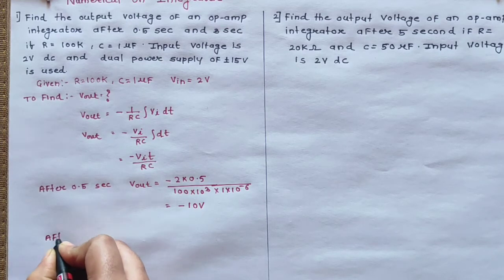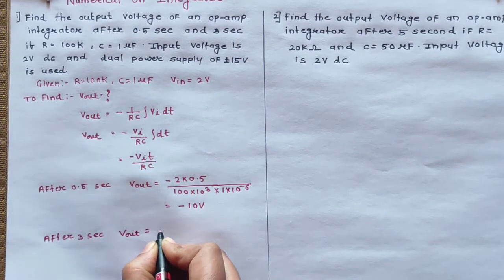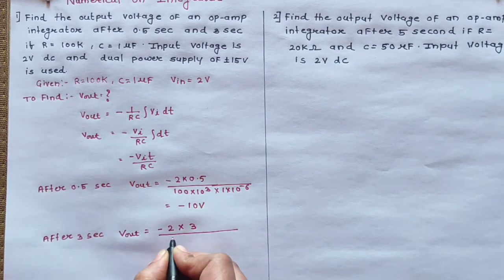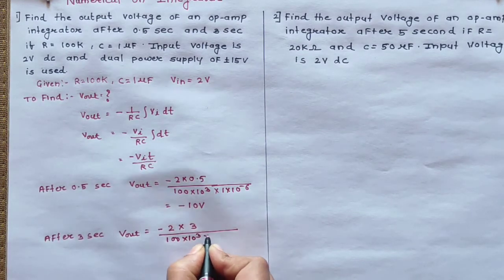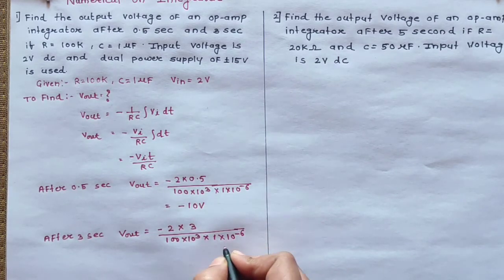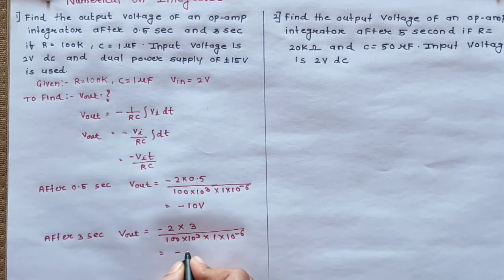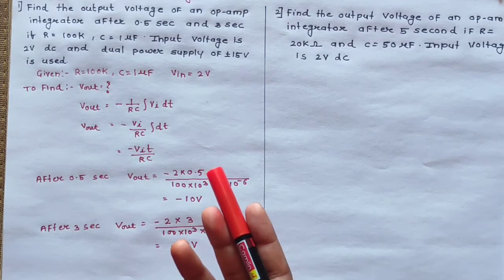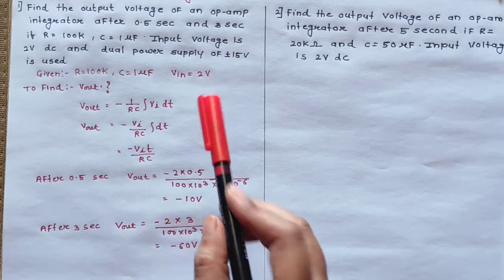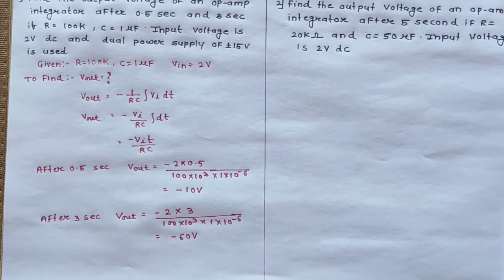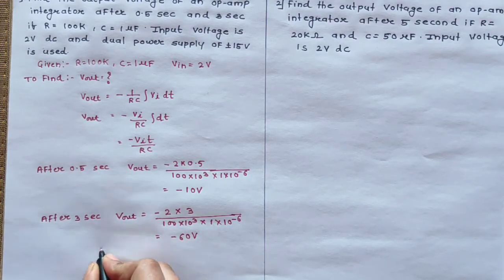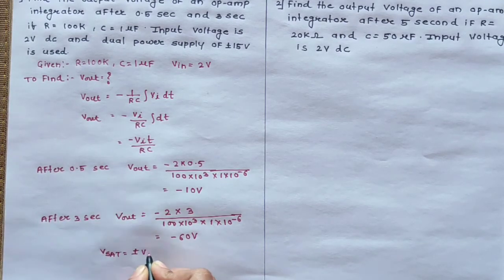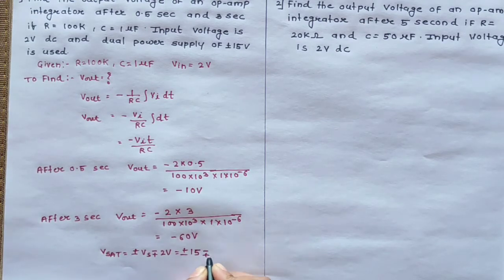After 3 second, Vout is equal to: the input voltage is same, 2 volt, into 3, upon 100 into 10 raise to the power 3, into 1 into 10 raise to the power minus 6. After solving this it comes out to be minus 60. But in this case they have specified the dual power supply of the operational amplifier — plus minus 15 volt. The output voltage is always equal to the saturation voltage, and the saturation voltage is given by the supply voltage minus plus 2 volt. So the saturation voltage is in the range of plus minus 13 volt.